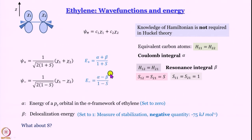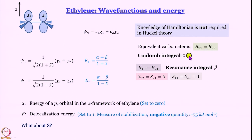In Huckel theory you do not need to know the Hamiltonian explicitly — you work in terms of integrals where the Hamiltonian is written as H. For equivalent carbon atoms, H11 equals H22; we call this the Coulomb integral alpha and set it to zero because all measurements are relative to alpha. H12 and H21 are equal to each other and are called the resonance integral beta, which gives the stabilization due to pi bond formation.